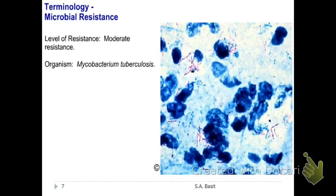Mycobacterium tuberculosis — acid-fast bacilli — because of mycolic acid in their cell wall, they are moderately resistant.